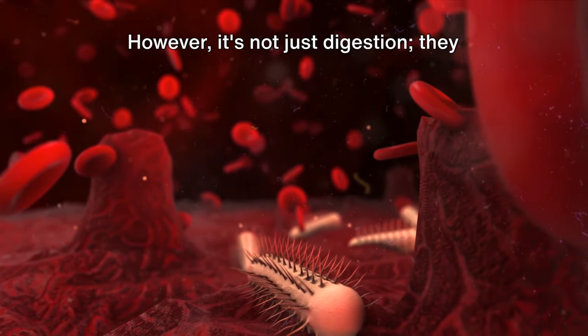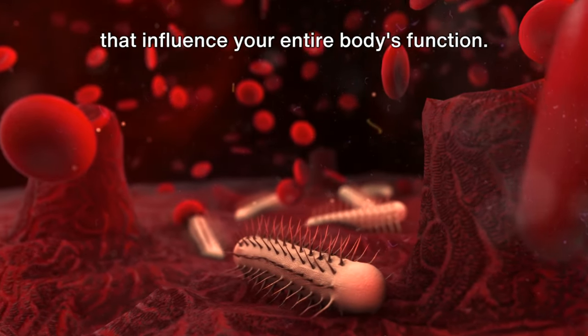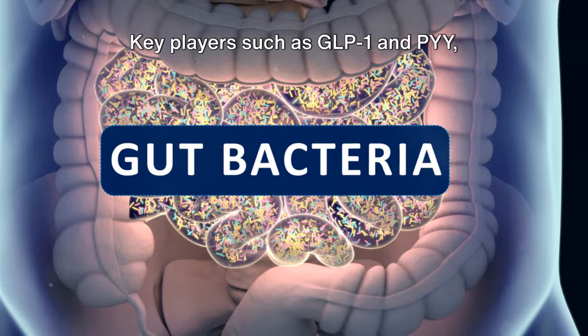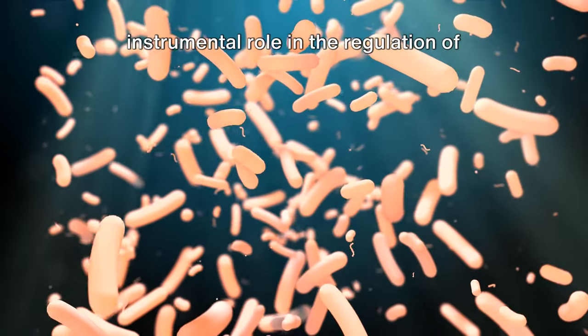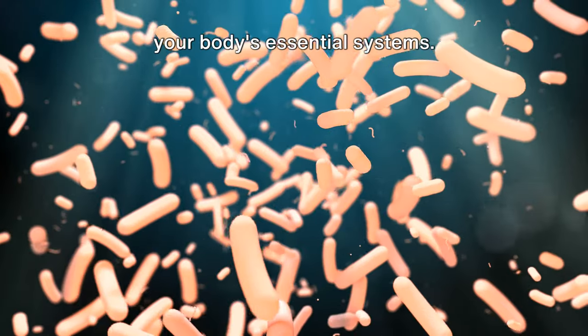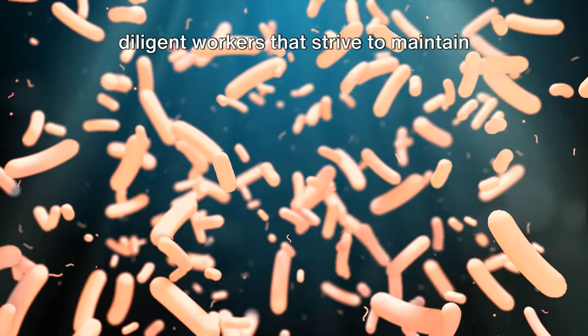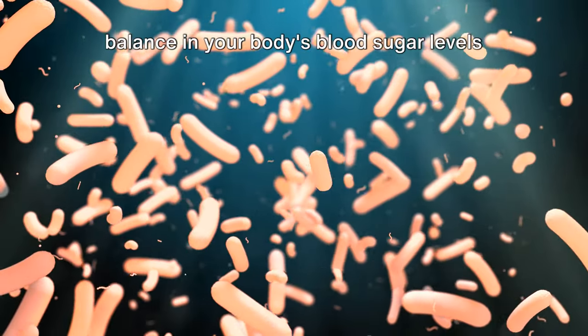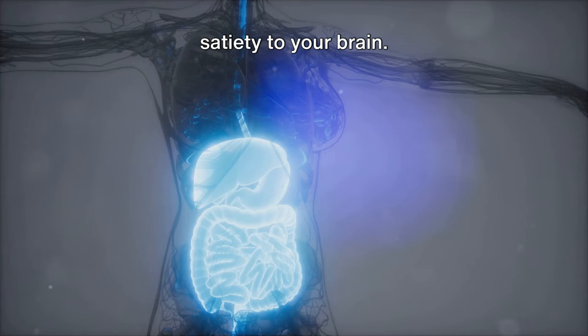However, it's not just digestion. They help convert food into critical molecules that influence your entire body's function. Key players such as GLP-1 and PYY, hormones produced in the gut, play an instrumental role in the regulation of your body's essential systems. They're diligent workers that strive to maintain balance in your body's blood sugar levels while simultaneously sending signals of satiety to your brain.